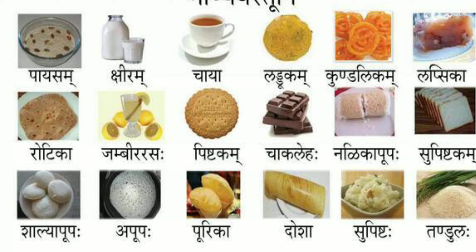In the second line, the first word Rotika belongs to Strilingaha. The second word, Jambirarasaha, ends with the 'Aha' pronunciation, so it belongs to Pumlingaha. Pishtakam ends with the 'Im' pronunciation, so it belongs to Napumsakalingaha. Chakalehaha belongs to Pumlingaha. Nalikapupaha belongs to Pumlingaha — masculine gender.